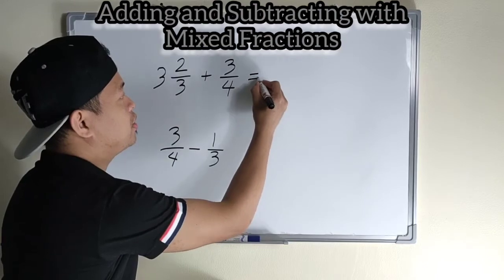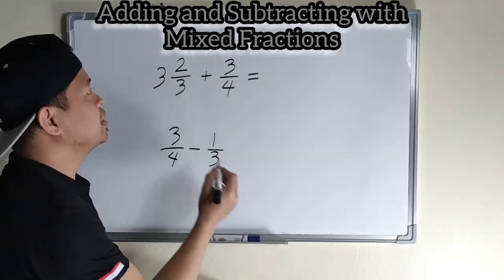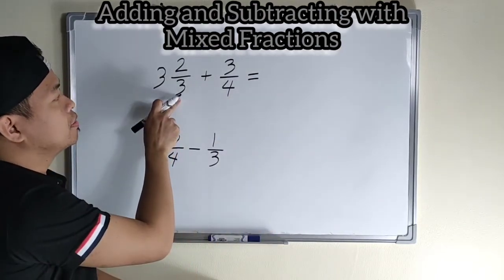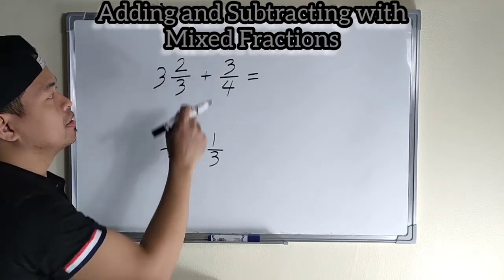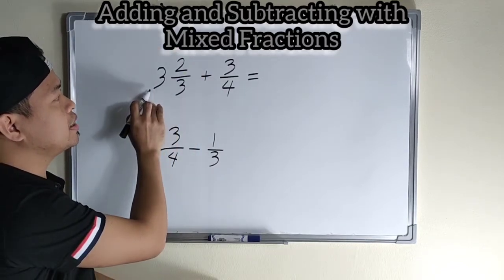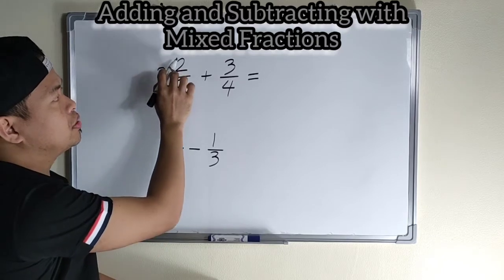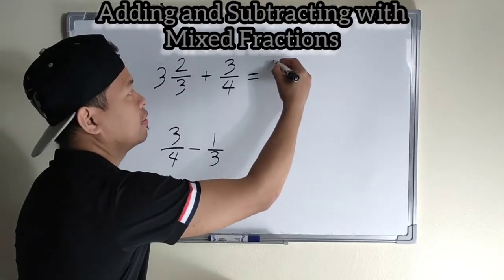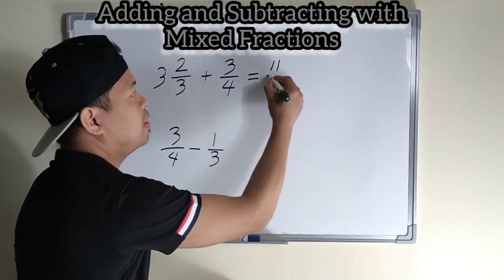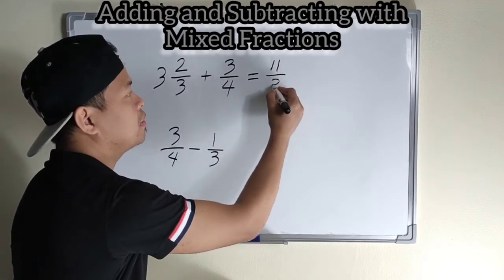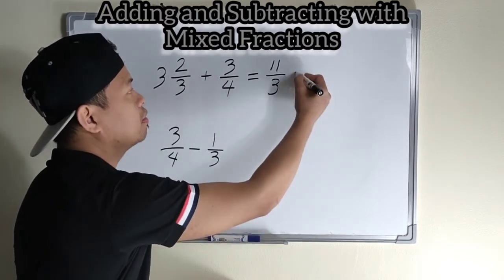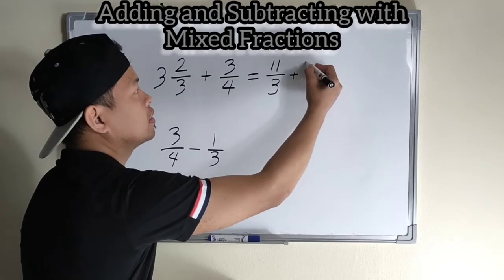Paano ba gawing improper fraction ang mixed number? Multiply then add. So three times three is nine plus two, eleven. So we have eleven, then copy the denominator which is three plus three-fourth.